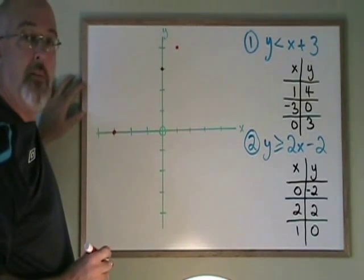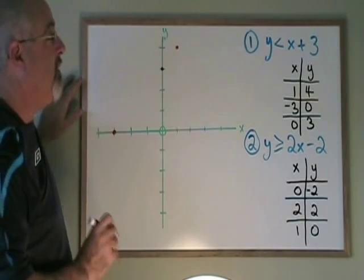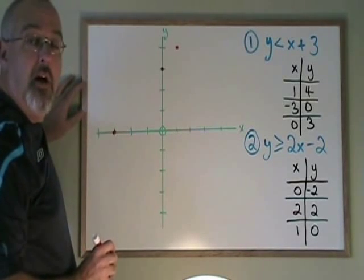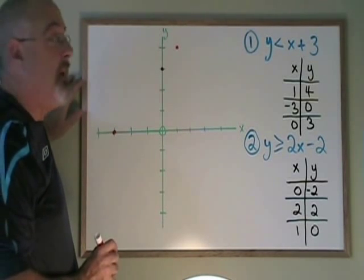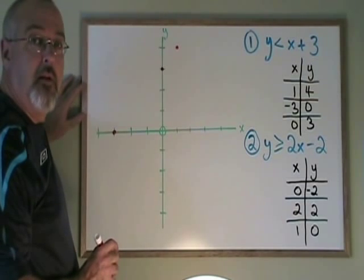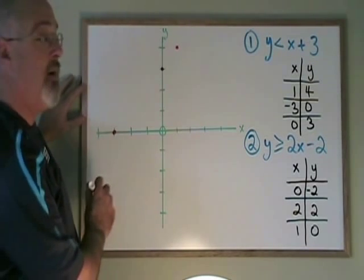I'm ready to draw my line, but what I have to do is stop and look at the symbol. I see less than, not less than or equal to. Because less than does not include points on the line, I have to represent this with a dotted line.